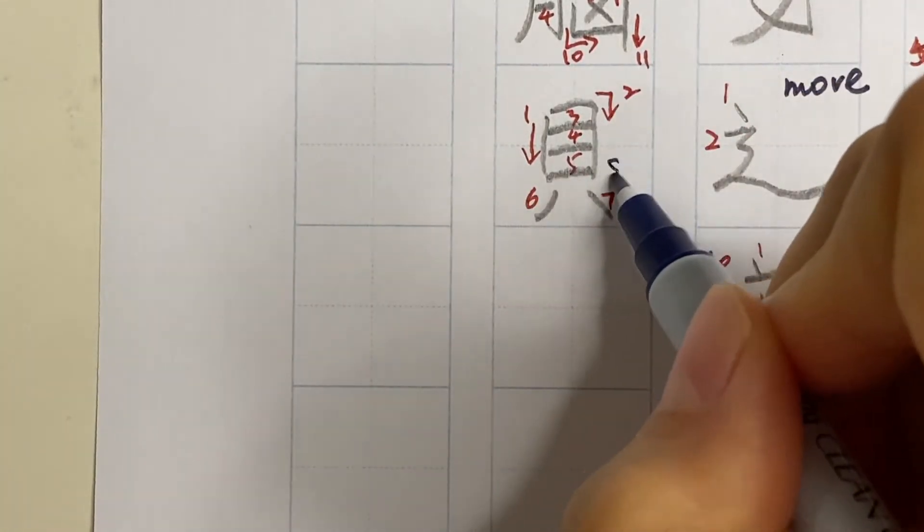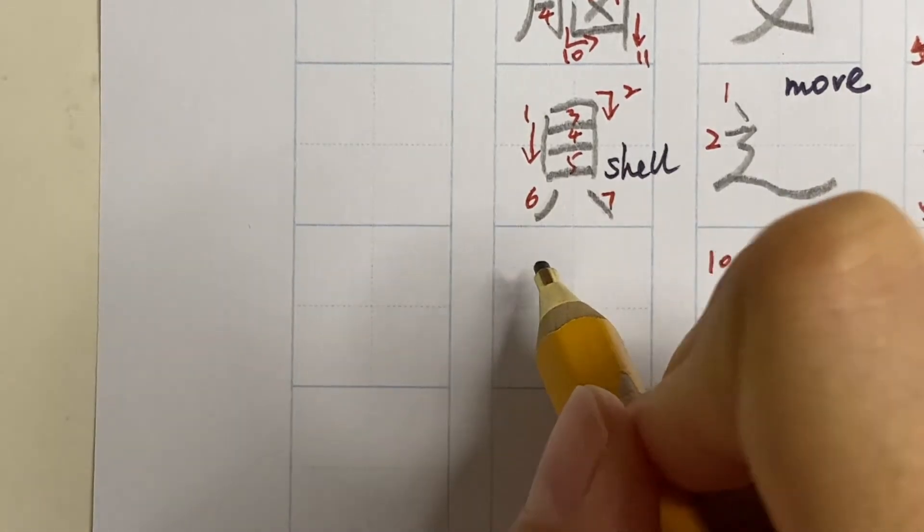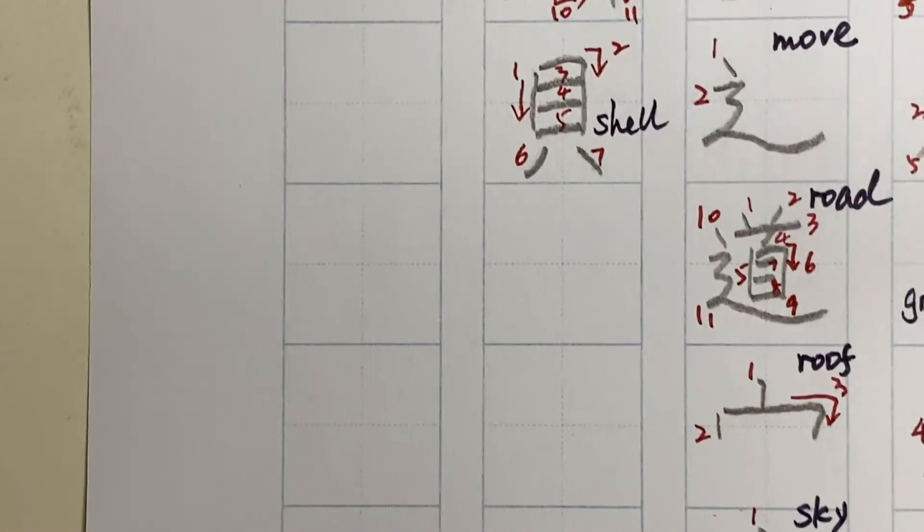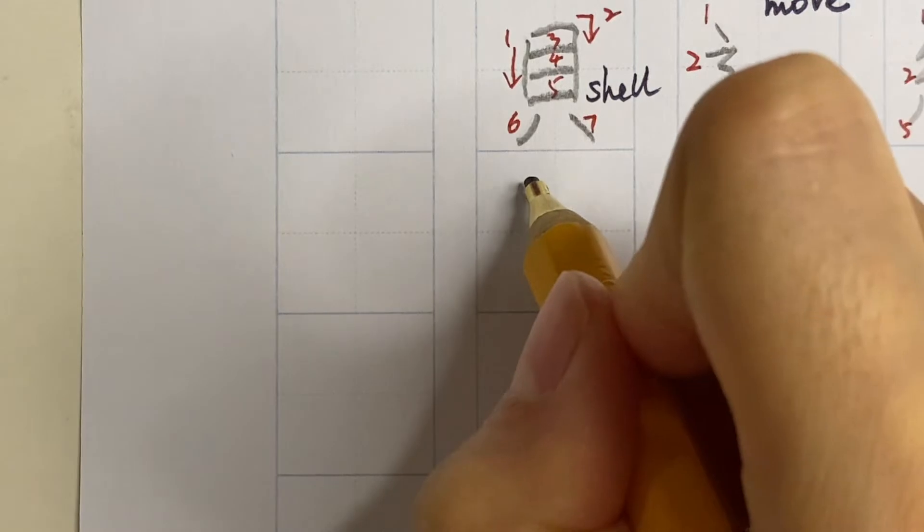And the meaning of this component is shell, kai. When it's used as a radical, it can appear on the left or at the bottom.